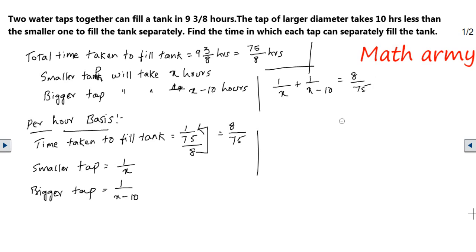Focus on the left hand side guys, do an LCM. The LCM would be X multiplied with X minus 10. On calculating, I will be getting numerator as X minus 10 plus X, which is equal to 8 divided by 75. X and X on the left hand side is 2X minus 10. On the denominator, X multiplied with X minus 10, which is equal to 8 divided by 75.